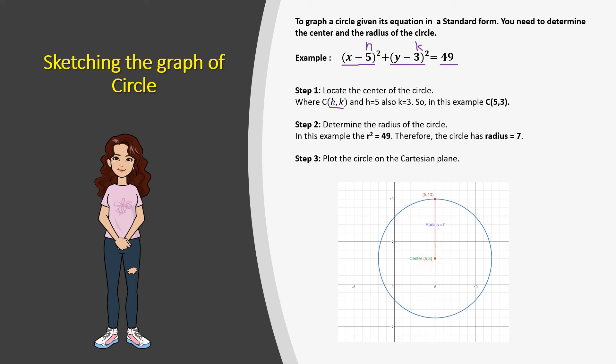Now let's determine the radius of the circle. In this standard form, 49 is r squared. So to find r, we have to find the square root of r squared. The square root of 49 is 7, so the radius r is 7.